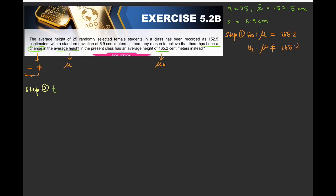T test is equal to x bar minus mu not over s over square root n. Okay. Substitute all the values. 152.5 minus 165.2 divide by s 6.9 divide by square root 25. Press your calculator. You will get negative 9.2029. Okay.